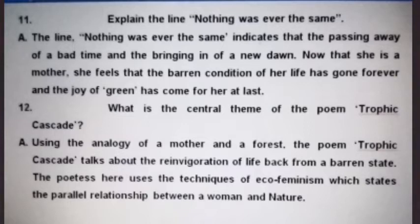The twelfth question: what is the central theme of the poem Trophic Cascade? Using the analogy of a mother and a forest, the poem talks about the reinvigoration of life back from a barren state. The poetess uses the technique of eco-feminism, which states the parallel relationship between a woman and nature.